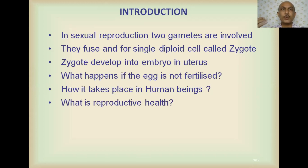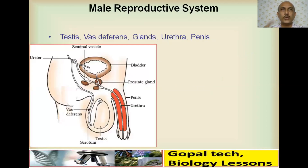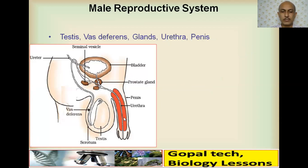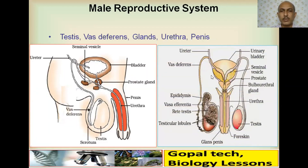We will also discuss reproductive health. The male reproductive system consists of parts like the testes — there are two testes with two functions: producing male gametes (sperm) and secreting the hormone testosterone. A long tube called the vas deferens carries secretions of the testes along with secretions of the seminal vesicles through a common ejaculatory duct called the urethra.